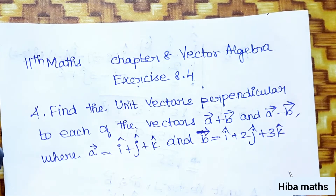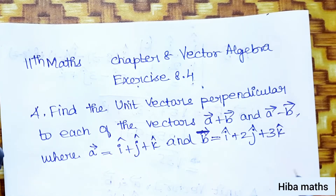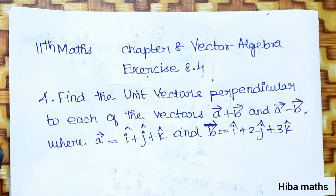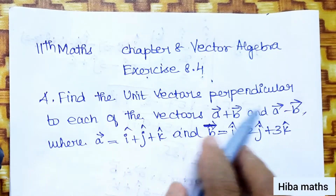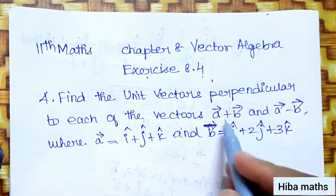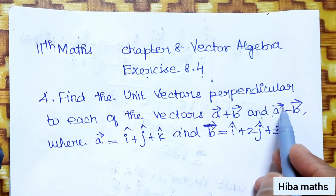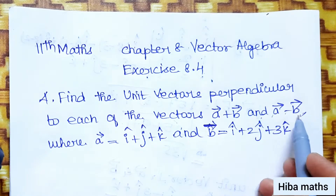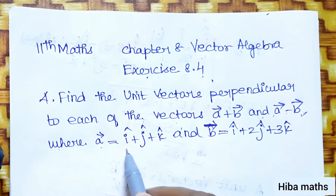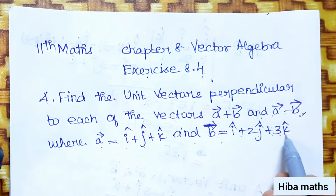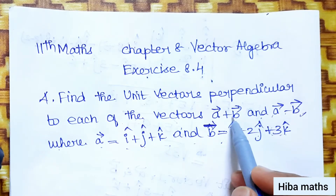Hello students, welcome to Hiba Max 11 Standard, Chapter 8 Vector Algebra, Exercise 8.4 Fourth question. Find the unit vectors perpendicular to each of the vectors A+B and A-B, where A vector equals i+j+k and B vector equals i+2j+3k.